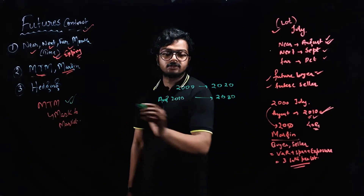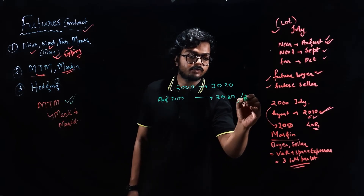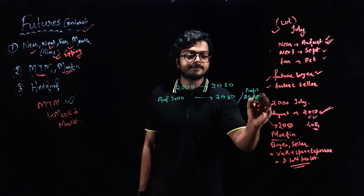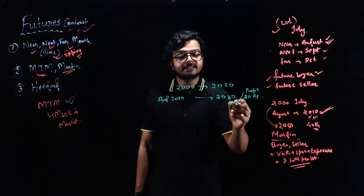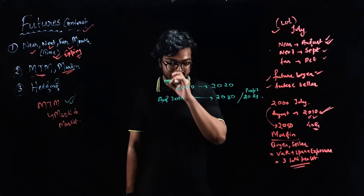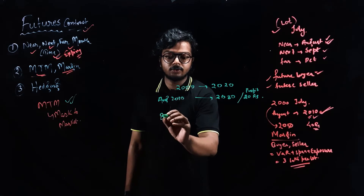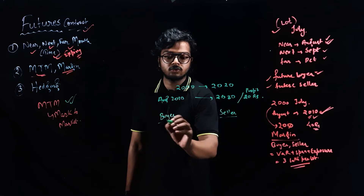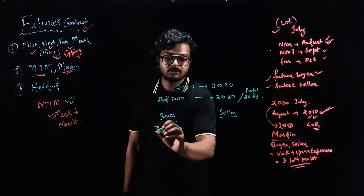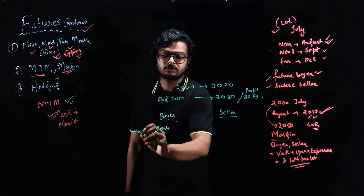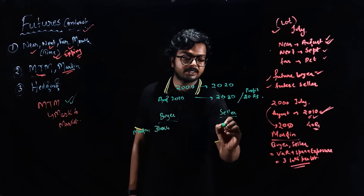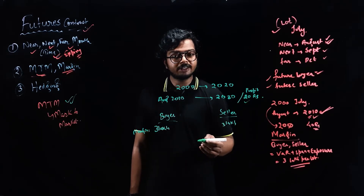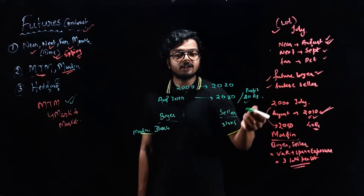So in the day you made a profit of 20 rupees. This profit would be credited to your account the same day. So you are the buyer and there is the seller. The initial margin blocked is 3 lakhs for both buyer and seller. As a buyer, you made a profit of 20 rupees per share.